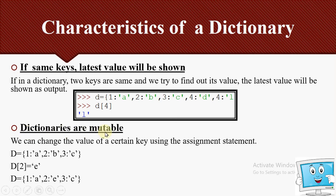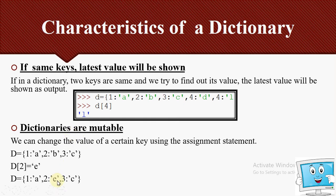The next characteristic is that dictionaries are mutable — meaning we can change the value of a key using an assignment statement. For example, if a dictionary has key 2 with value B and I write D[2] = E, then when you print D, the value at key 2 changes to E. However, note that the keys themselves must be immutable — mutability refers to the values, not the keys.